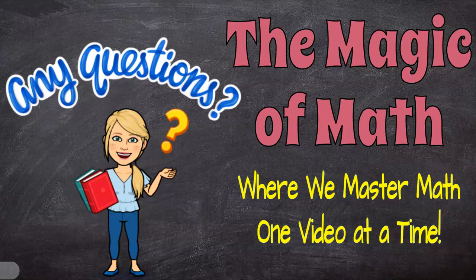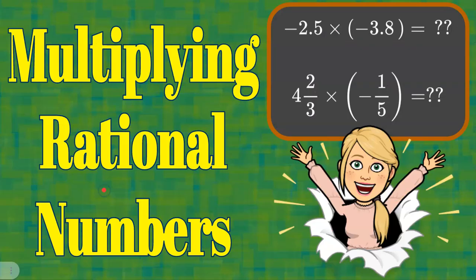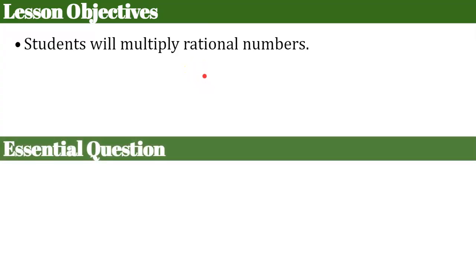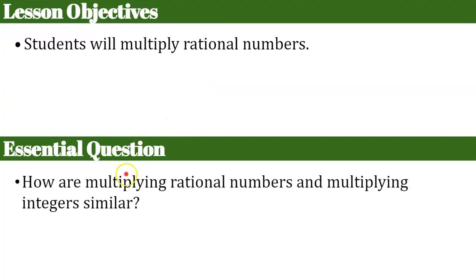Welcome to the Magic of Math, where we master math one video at a time. Our lesson today is on multiplying rational numbers. Our objective is that you will multiply rational numbers. The essential question for today is: how are multiplying rational numbers and multiplying integers similar? What I'm asking is how can you use what you already know to multiply rational numbers?